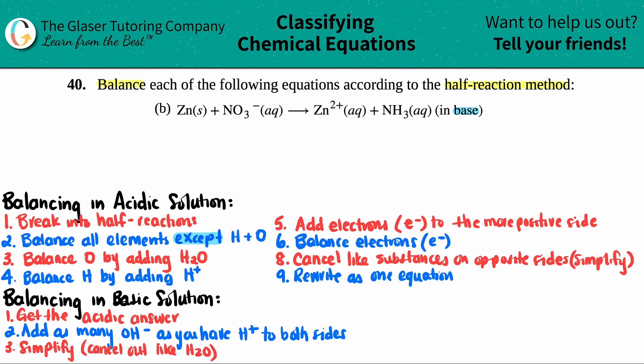If I look at the first rule, it says get the acidic answer. The first thing you're going to have to do is actually get the acidic answer, and then you just do a couple of tweaks. The acidic solution is always the harder one because this is all the rules. So now we have to go through the whole acidic solution first to get the basic answer. We're going to be figuring out what this would be in acid, then we just add a couple of tweaks.